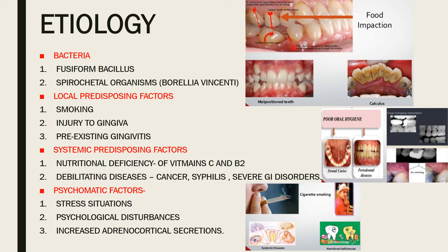Local predisposing factors include smoking, injury to the gingiva, and pre-existing gingivitis. Systemic factors include nutritional deficiency — specifically deficiency of vitamins C and B2 — and debilitating diseases like cancer, syphilis, and severe gastrointestinal disorders.